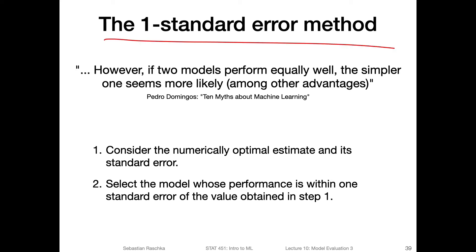So now the one standard error method. Consider the numerically optimal estimate and its standard error. If you do the model selection via k-fold cross validation, you get the performance estimates. Sometimes two hyperparameter settings give you a very similar or identical performance. Then you can select the model whose performance is within one standard error of the value obtained in step one. You have, let's say, an optimal method that has the absolute best performance, and you just look which of the other settings are within one standard error of this performance. I will show you a code example of how I would do that in practice. The code example will be in the next lecture.